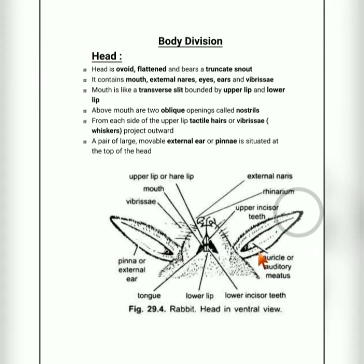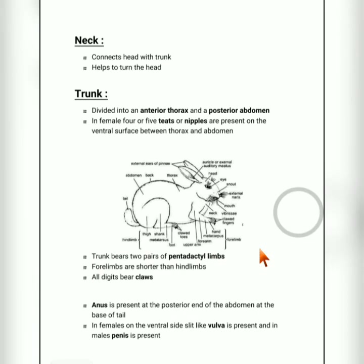There is also a pair of large, movable external ears. These external ears are called pinnae. The next part is the neck.